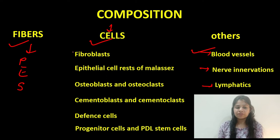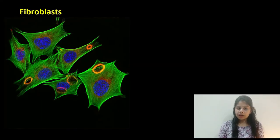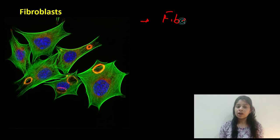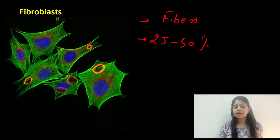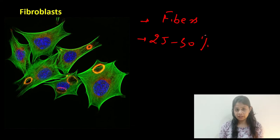The first type of cells are the fibroblasts. As the term suggests, fibroblasts help in the production of fibers — specifically collagen production. They occupy 25 to 30 percent of the volume of the periodontal ligament and are responsible for the formation and remodeling of the periodontal ligament space.